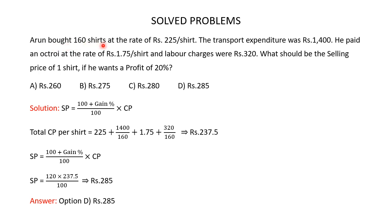Harun bought 160 shirts at the rate of Rs 225 per shirt. The transport expenditure was Rs 1400. He paid octroi at the rate of Rs 1.75 per shirt and labor charges were Rs 320. What should be the selling price of 1 shirt if he wants a profit of 20%? You are asked to find the selling price of 1 shirt using the formula: selling price equals (100 plus gain percent) over 100 multiplied by cost price.